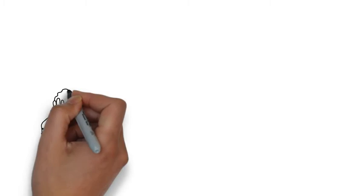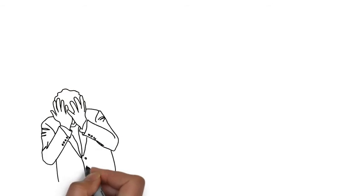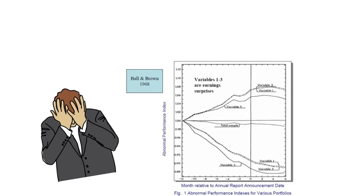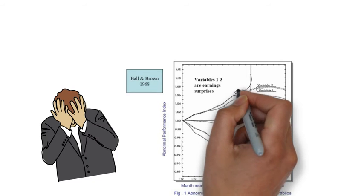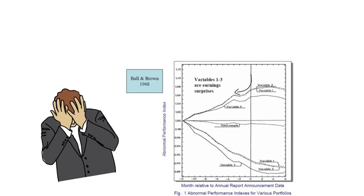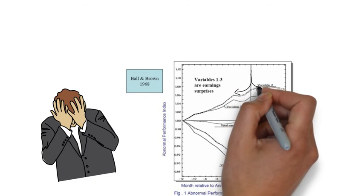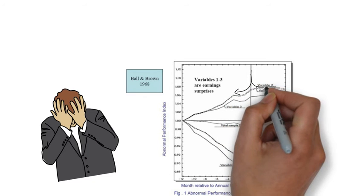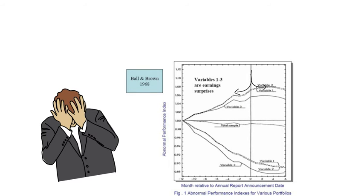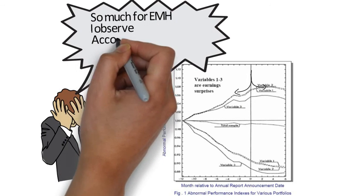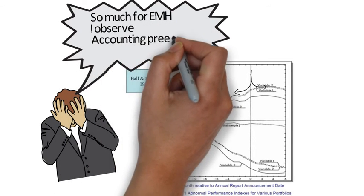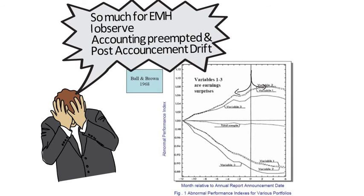This new information is referred to as unexpected earnings. But the empirical results tell us that, although there is some reaction to the release of accounting information, much of the result has been anticipated or preempted, because there is other information that the market uses to anticipate the earnings result. Furthermore, the market doesn't react immediately or completely to the accounting information, and this is called post-announcement drift.